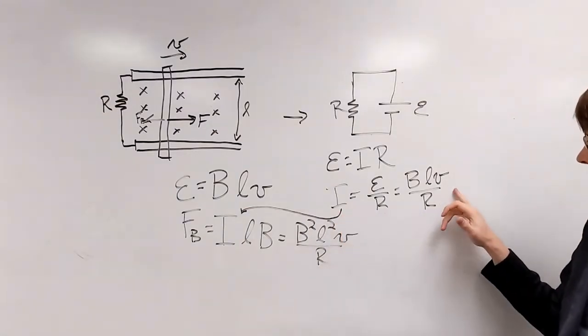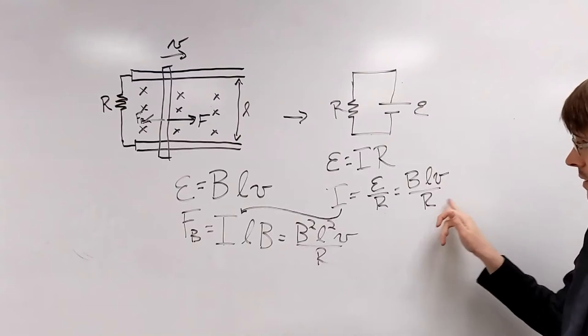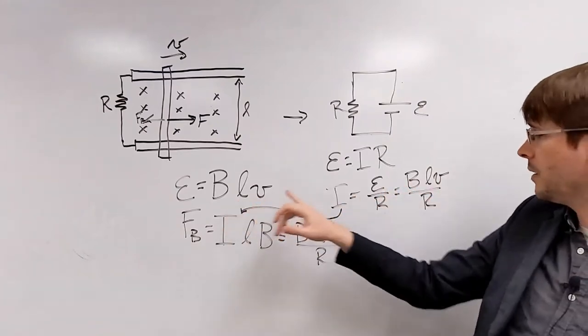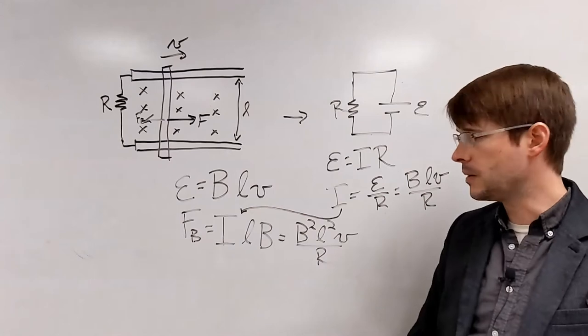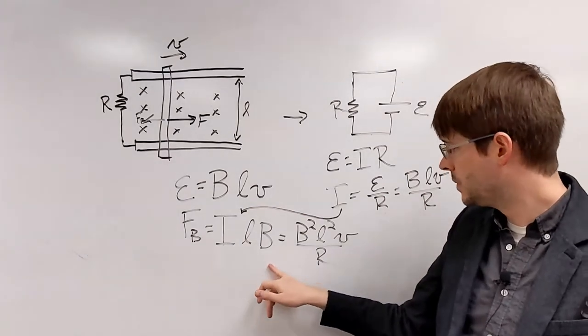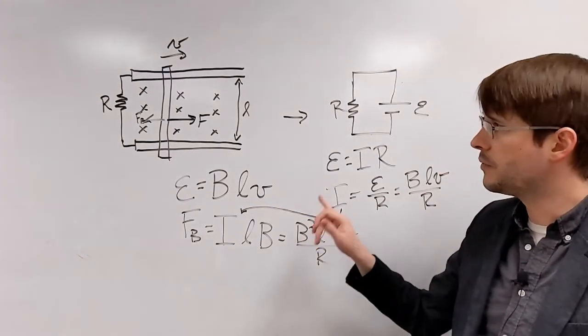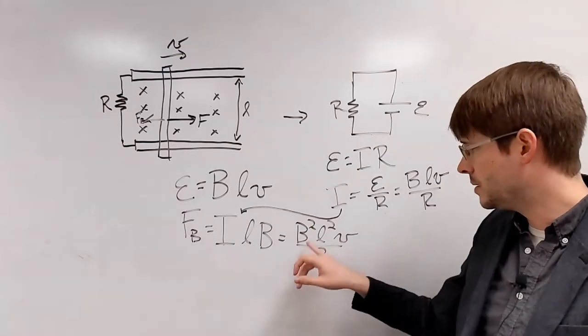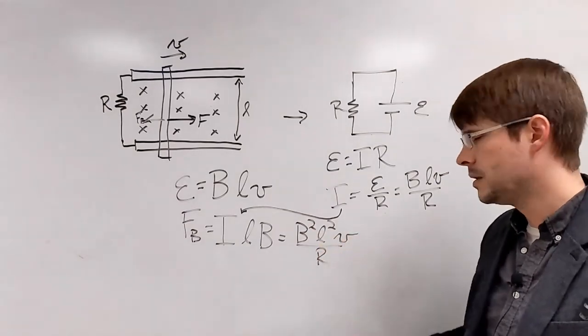All right. So we found the current here as BLV over R. That's just the EMF, which we found, divided by R. And if we substitute that in to figure out the equation for the force, well, we get this expression right here, is that the force, magnetic force backwards, is B squared L squared V over R.